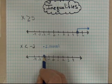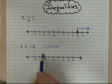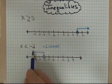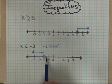And just like above, I want to show the direction where all the numbers exist that are smaller than negative 2. Well, on a number line, those numbers exist this way. So this shows me all the numbers that are strictly smaller than negative 2.